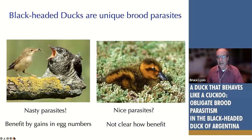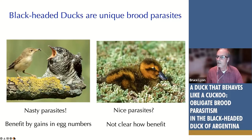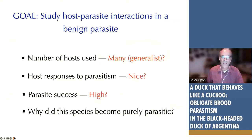Going back to the pattern: 99 species of nasty brood parasites that steal parental care from hosts — we speculate these evolved because of huge gains in egg numbers. But then there's this one outlier that attracted our attention: the black-headed duck. It should be a 'nice' brood parasite — its ducklings basically don't need food from the parents, just a little warmth to incubate the eggs. This led us to wonder about its interactions with hosts and what's special about this one duck that gave up on raising its own kids.